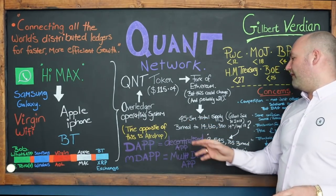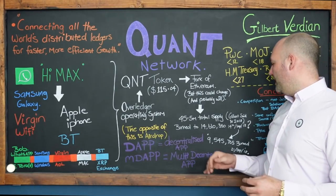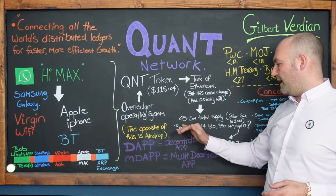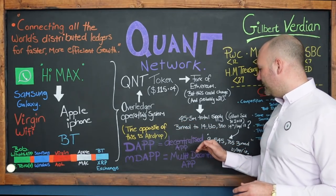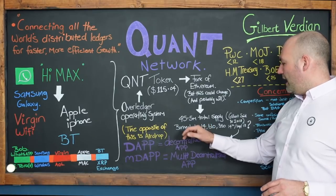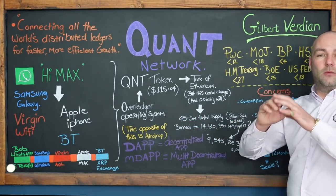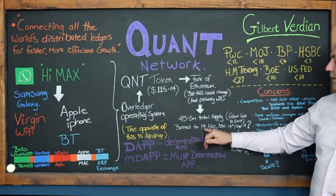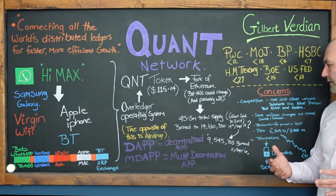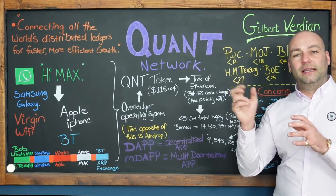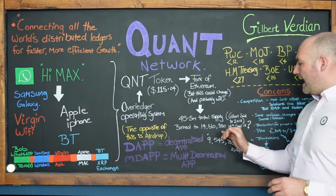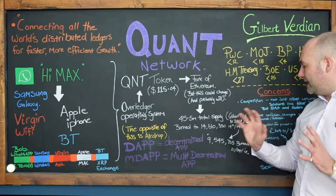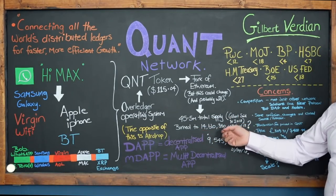Originally there were 45.5 million total tokens in supply. Gilbert Verdon said in September 2018 that the total supply was capped at 45.5 million. But then, somewhat out of the blue, those 45.5 million tokens were burned — meaning locked away forever and taken out of circulation — down to a total of 14,610,350 tokens. Burned means taken out, locked away forever outside the ecosystem.